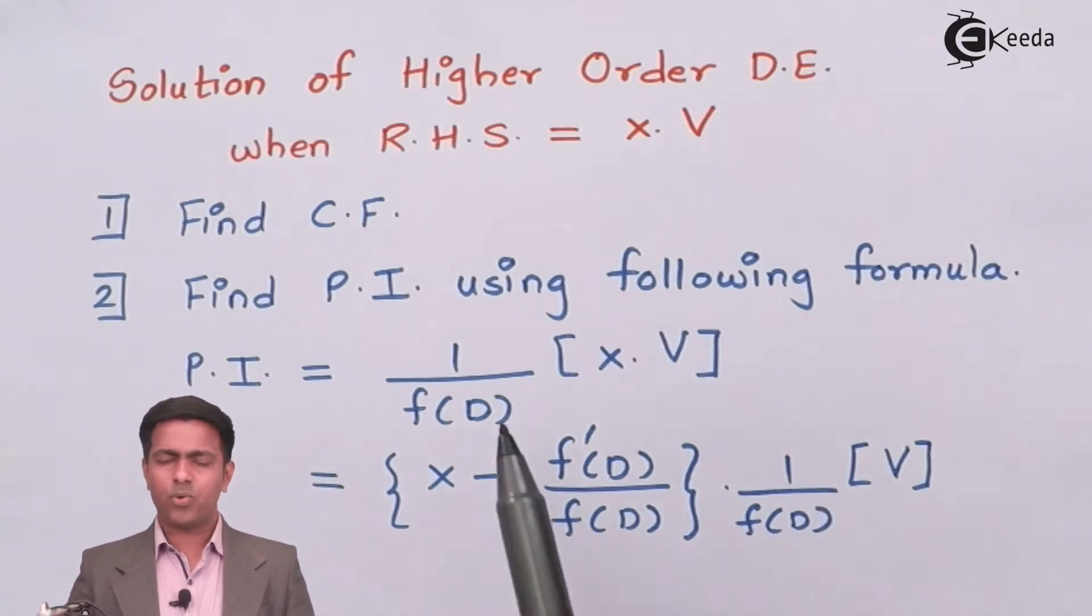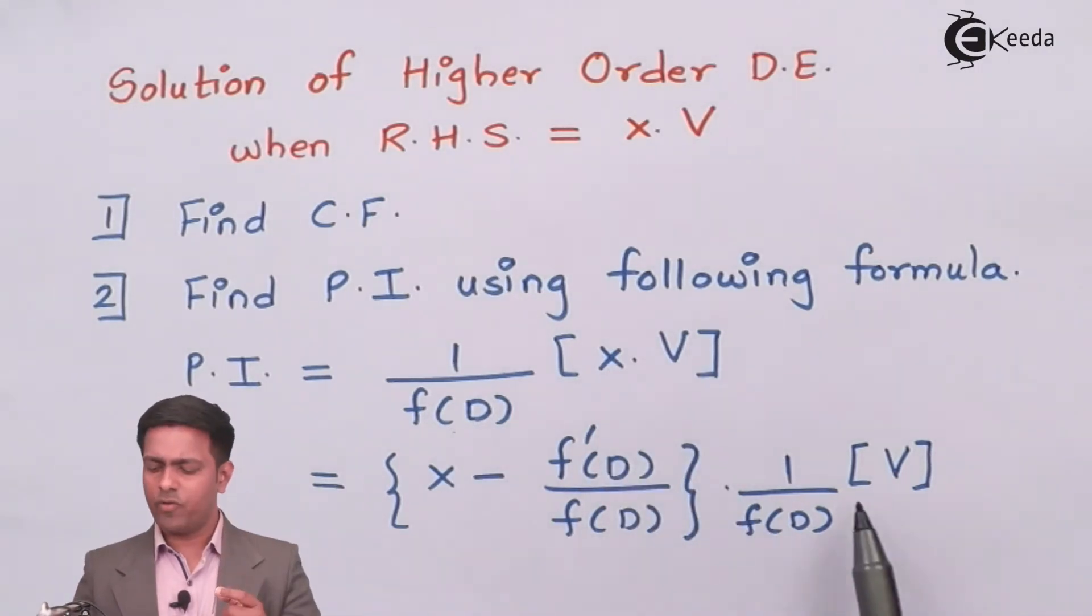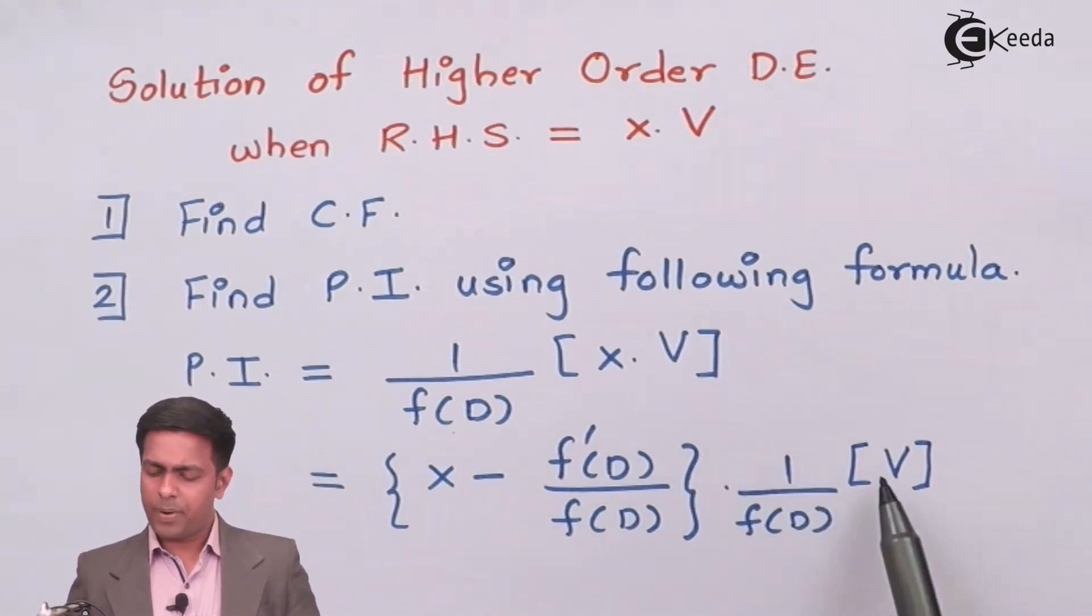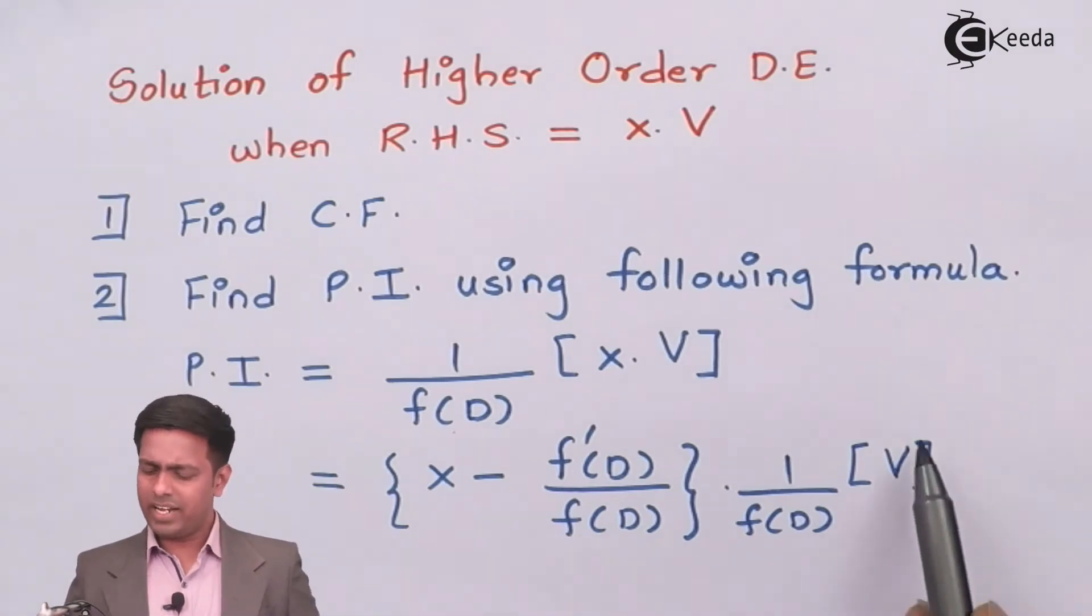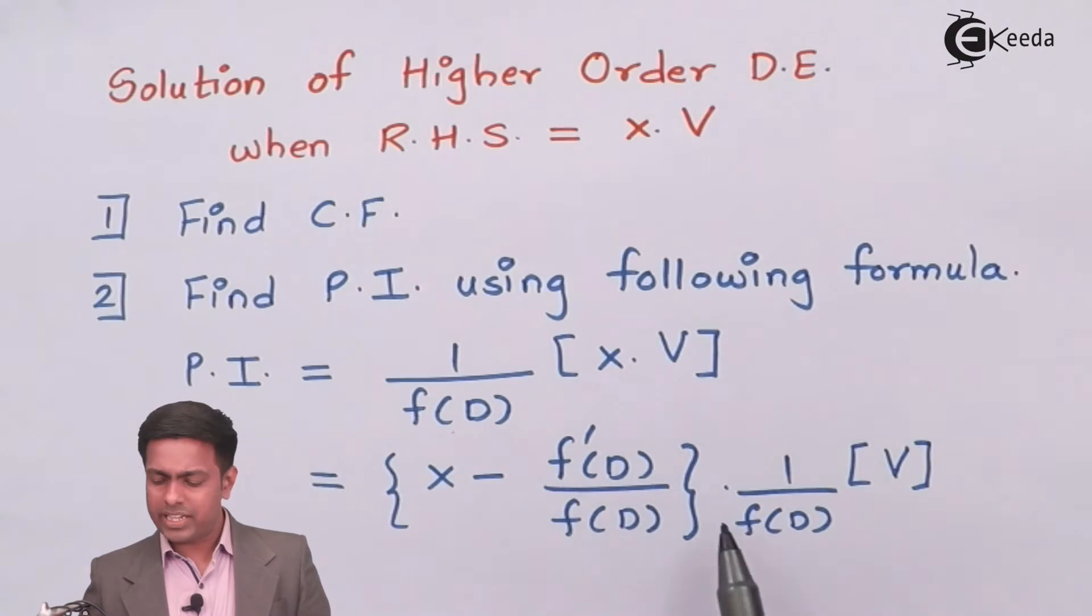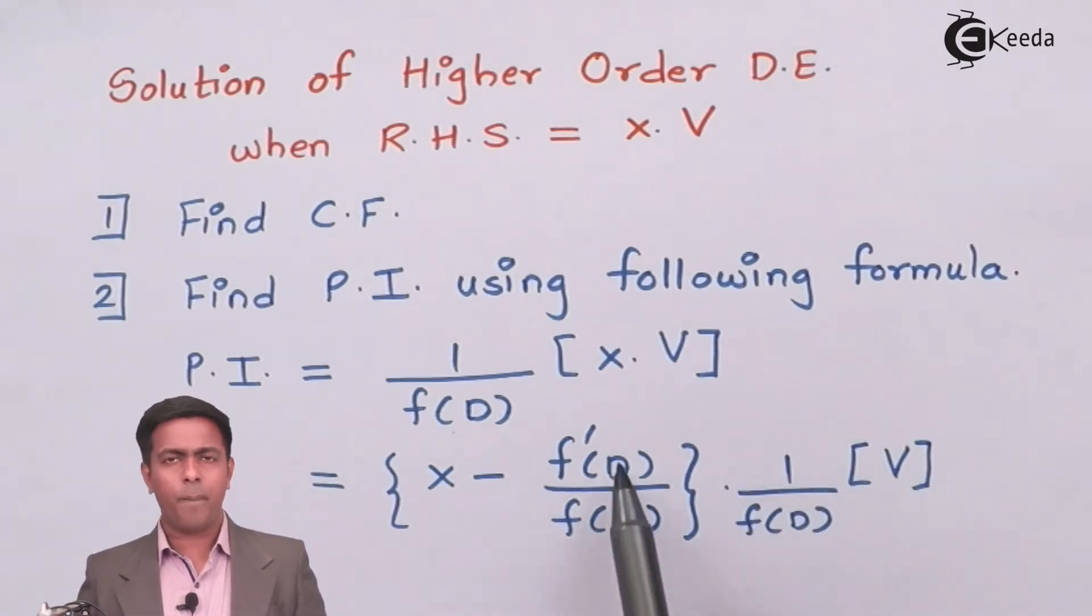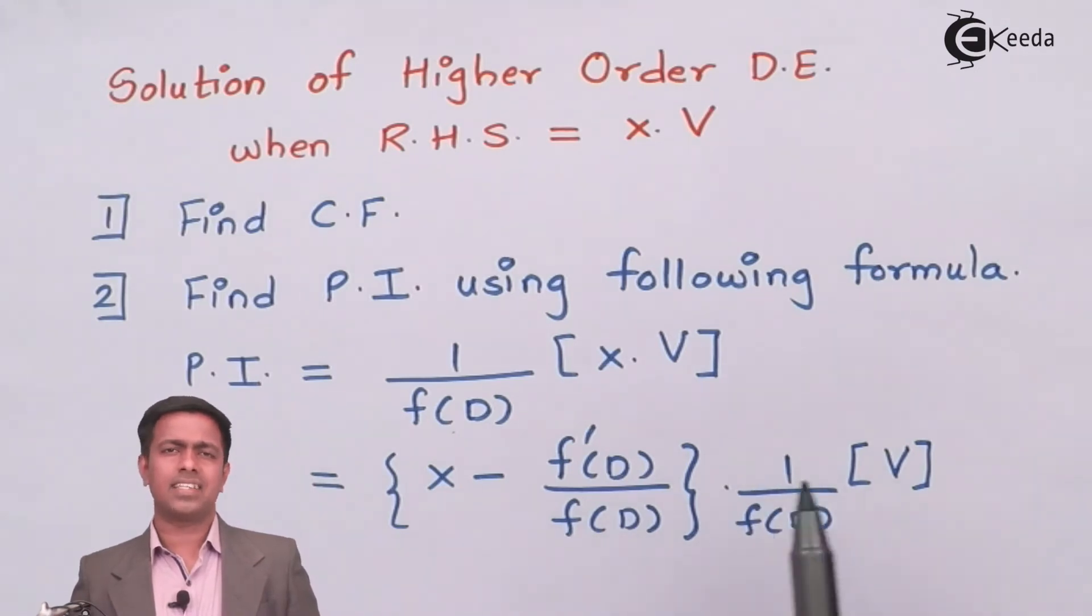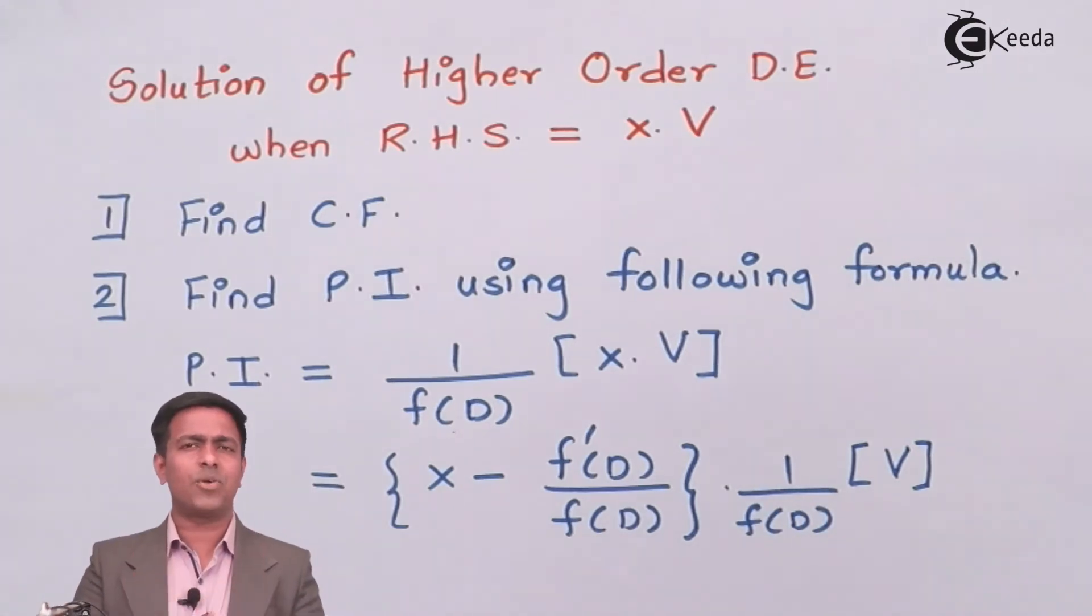This means we don't have to apply this function of d on both x and V. We will just apply it on V after applying this formula. We'll apply this function of d on V. V is some function of x. We'll get some answer. We'll multiply this bracket with that answer, and again we will apply this operator on that answer. By doing this we can get the value of the particular integral.